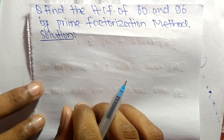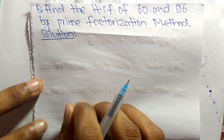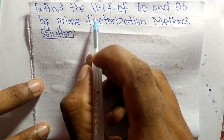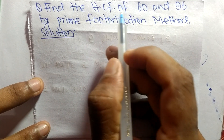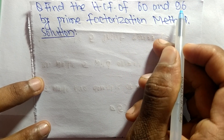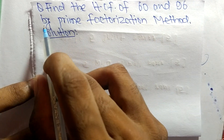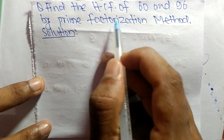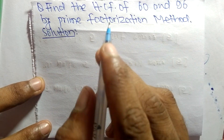Today in this video we shall learn to find the HCF of 60 and 96 by the prime factorization method.